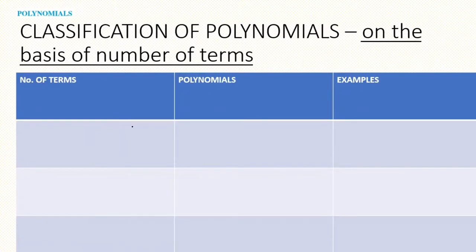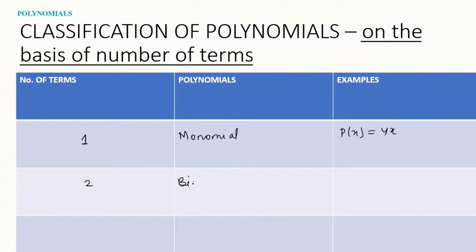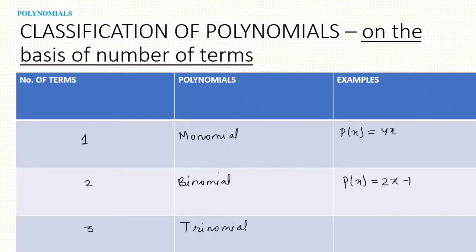Classification of polynomials by number of terms: a single-term polynomial is called a monomial — for example, 4x. A two-term polynomial is called a binomial — for example, 2x minus 1. A three-term polynomial is called a trinomial — for example, x² minus x plus 1.